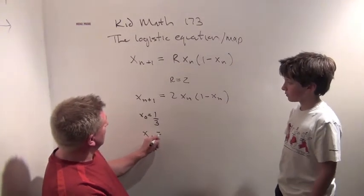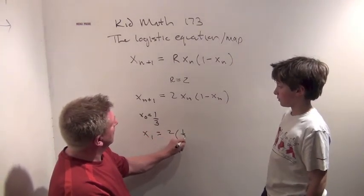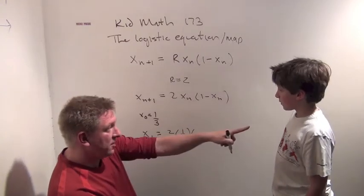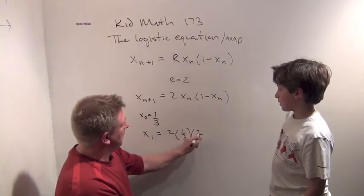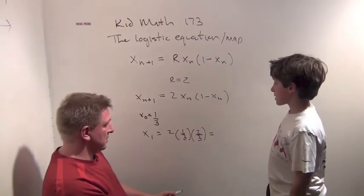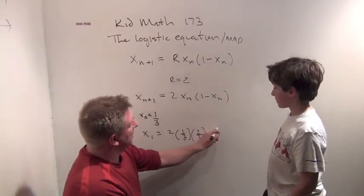So x1 is going to equal 2 times a third times 1 minus a third, which is 2 thirds. And that's going to equal 4 ninths.